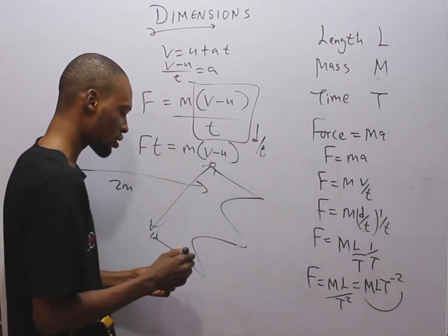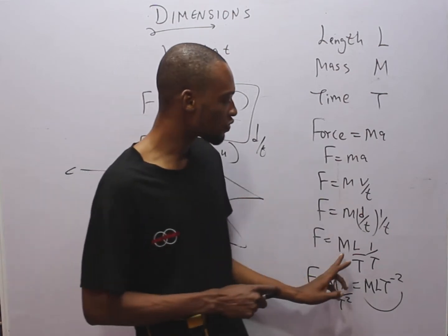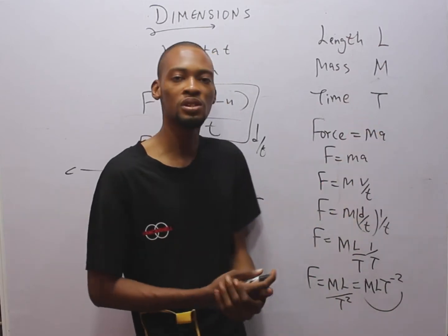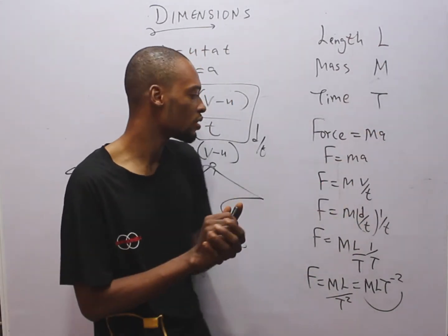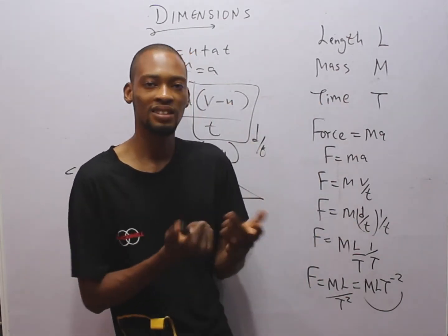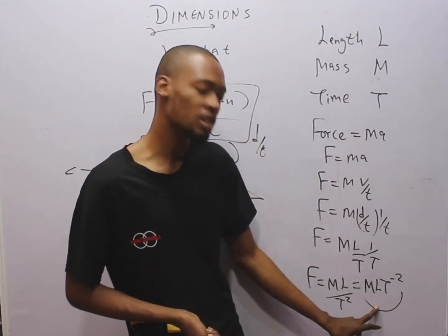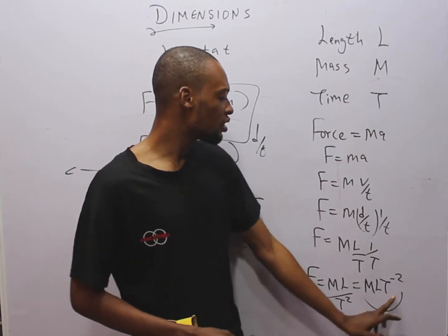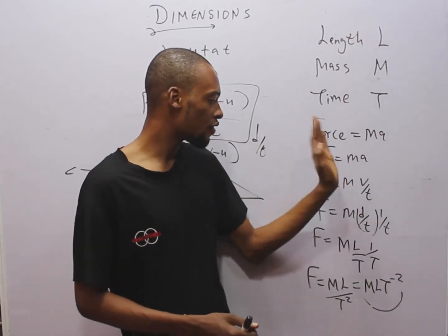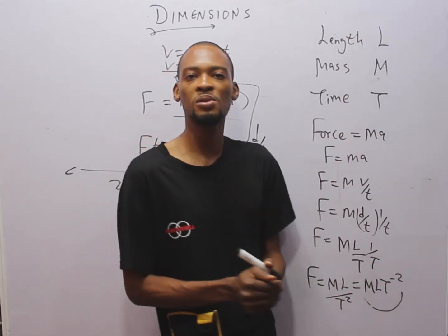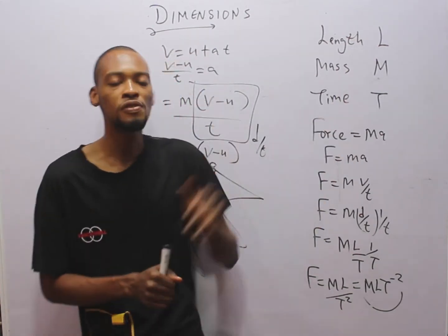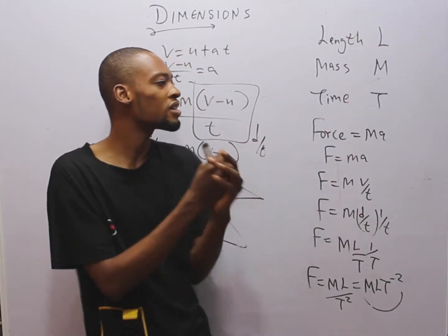So you can see that force is derived from mass, length, and time — all fundamental quantities. That makes force a derived quantity. This is a typical exam question: given the dimension of force, or asked which quantity has this dimension. Temperature is also a fundamental quantity and its unit is Kelvin. I'll share a link to the full intro videos. Now let's solve one or two questions.